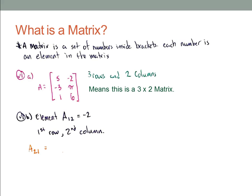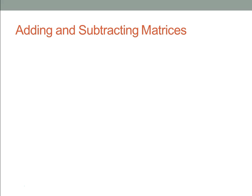So let's try some quick ones. What's A21? If you said negative 3, you're correct. And what's A32? And if you said positive 6, you're right. All right, cool. Let's get some of that good, just basic groundwork out of the way.